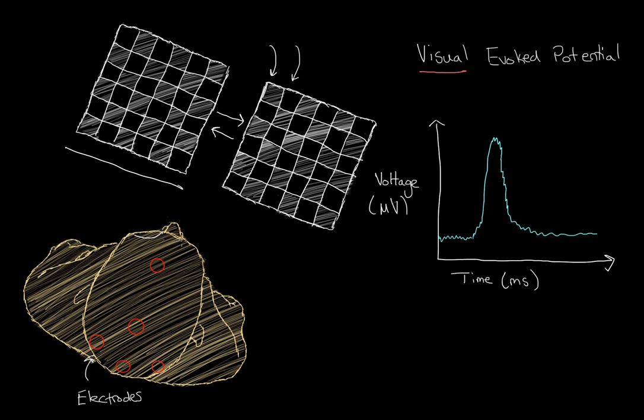Given that this is a visual evoked potential, you're going to be measuring activity from visual areas in the brain. You have your eyes, and at the back of the eyes are the optic nerves. The optic nerves will carry visual information in the form of electrical activity to the rest of the brain.